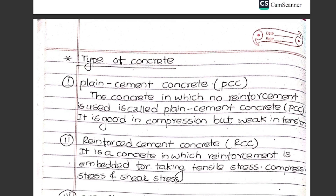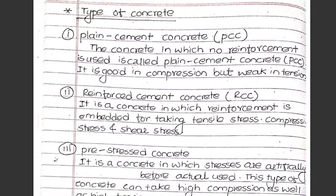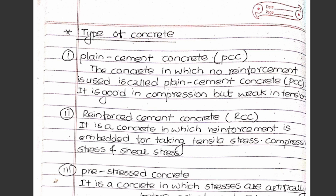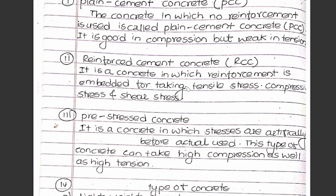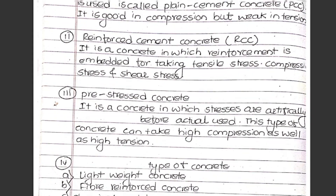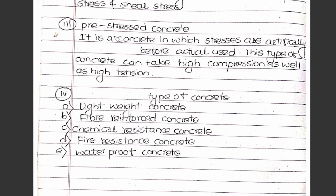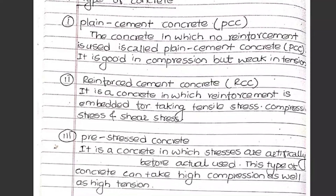The main types of concrete are three: Plain Cement Concrete (PCC), Reinforced Cement Concrete (RCC), and Pre-stressed Concrete. PCC has no reinforcement — it is good in compression but weak in tension. RCC is concrete in which reinforcement is embedded for taking tensile stress. Pre-stressed concrete is concrete in which stress is artificially applied before use; it has both high compressive and high tensile capacity.